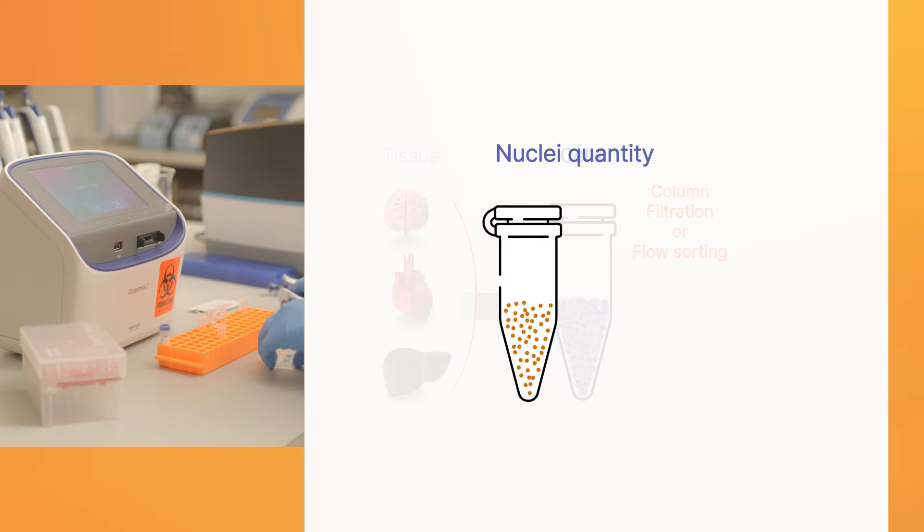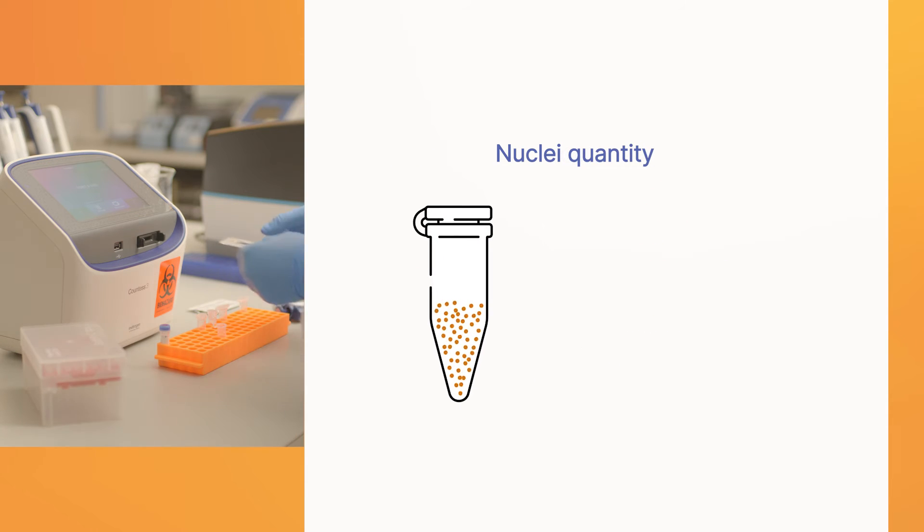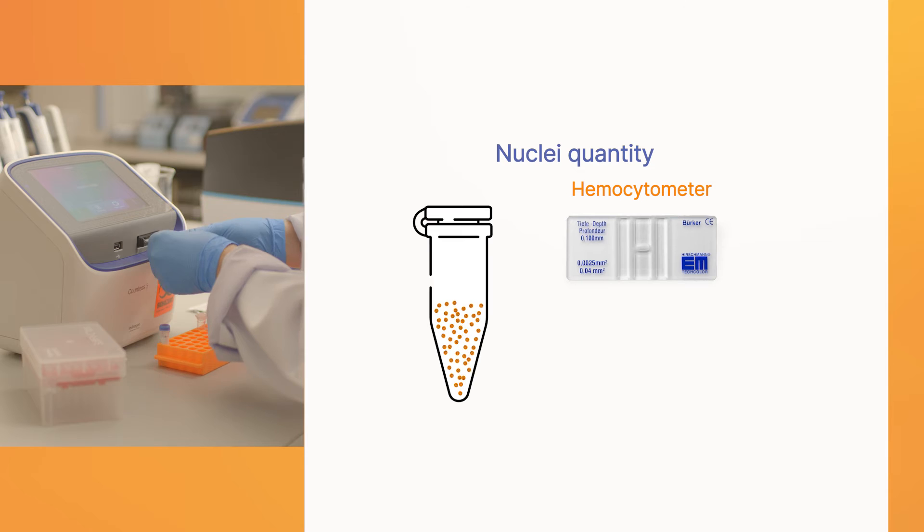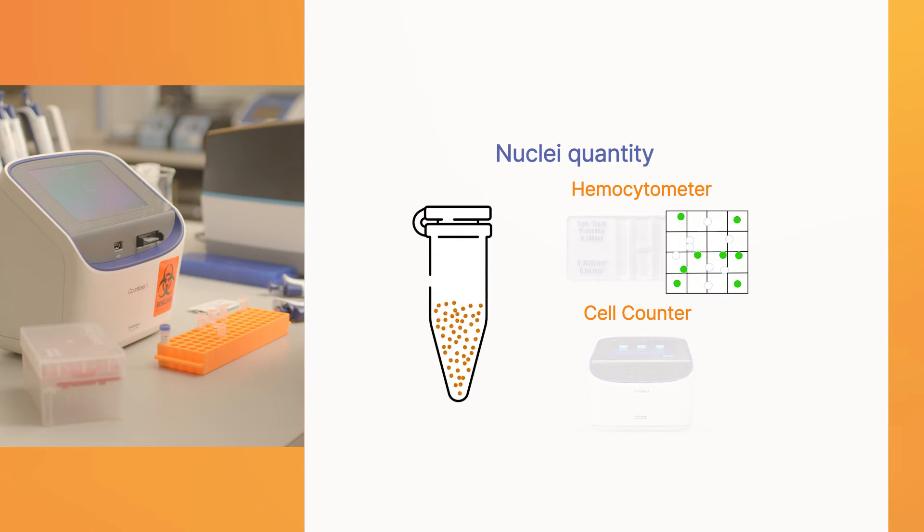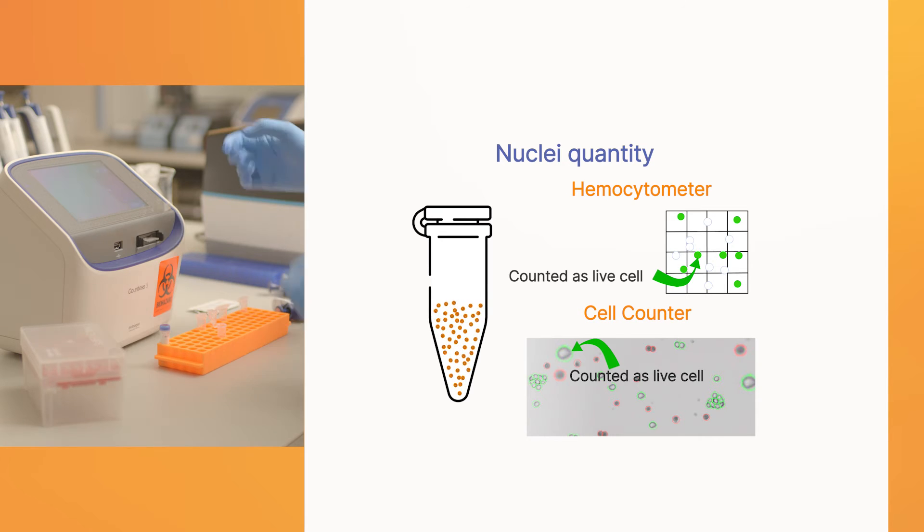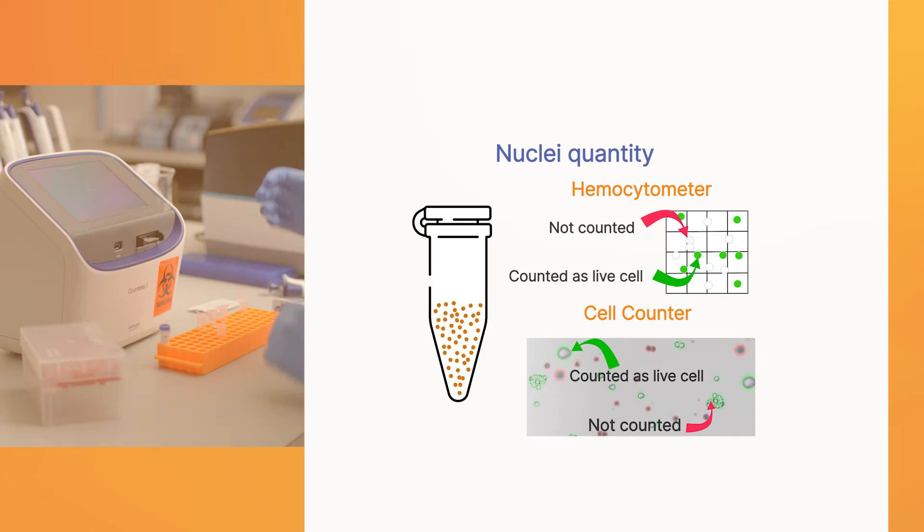An accurate measure of the quantity of whole intact nuclei is critical. Using an automated hemocytometer or cell counter can help identify the proportion of nuclei in your sample that are high-quality and completely dissociated rather than present in clumps.